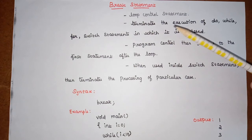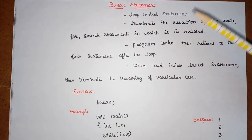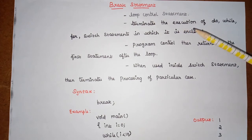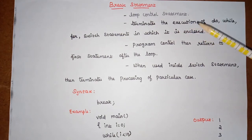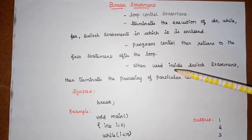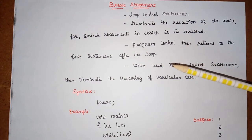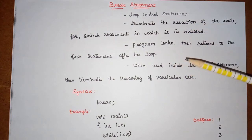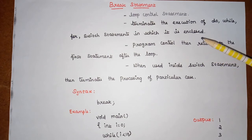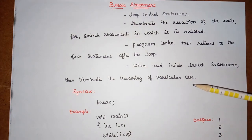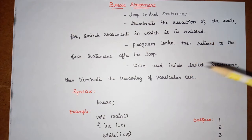Whenever a break statement is encountered by the compiler, it will automatically terminate the execution of that particular loop. It will not terminate the entire program, but only the loop. When the loop gets terminated, the program control returns to the first statement present after the loop — outside the loop. When break is used inside a switch statement, it terminates the processing of that particular case.